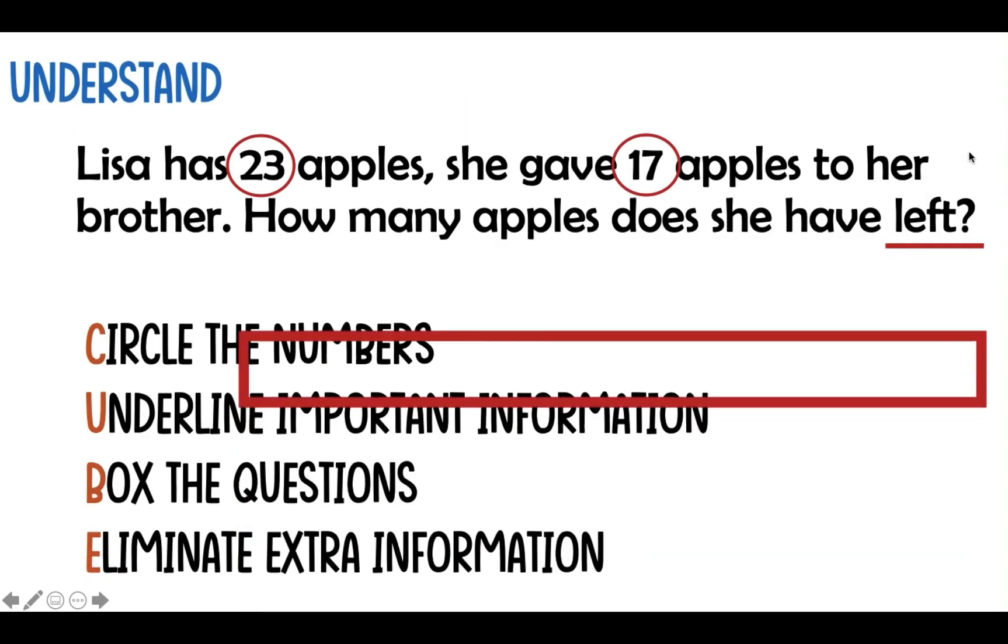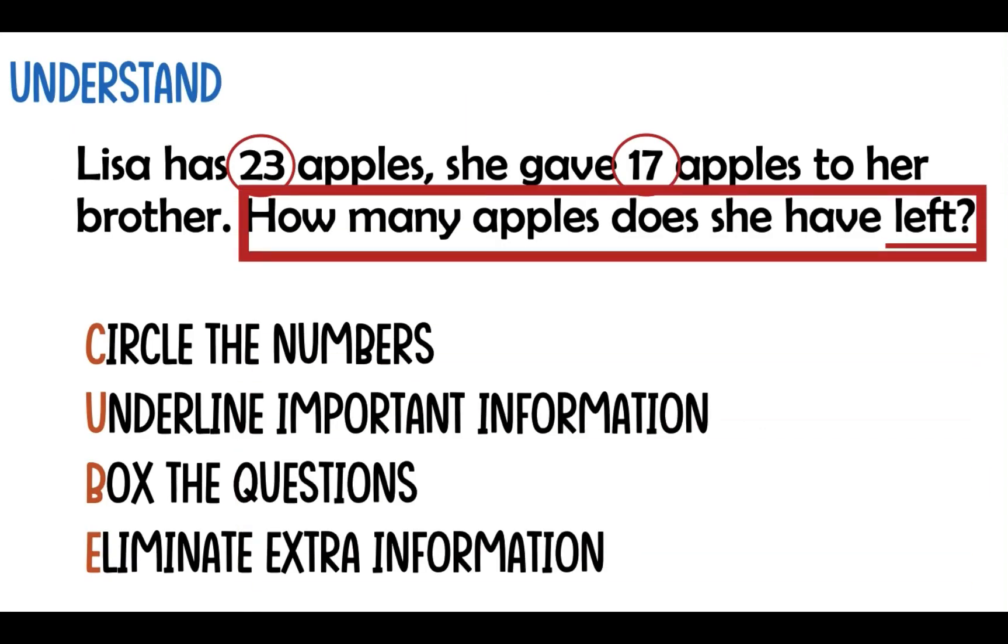Okay, so the next step is to box the question. We are going to box how many apples does she have left, and we are going to eliminate extra information. I don't have extra information on this problem, so I don't have to eliminate anything. And I can go to the next step.